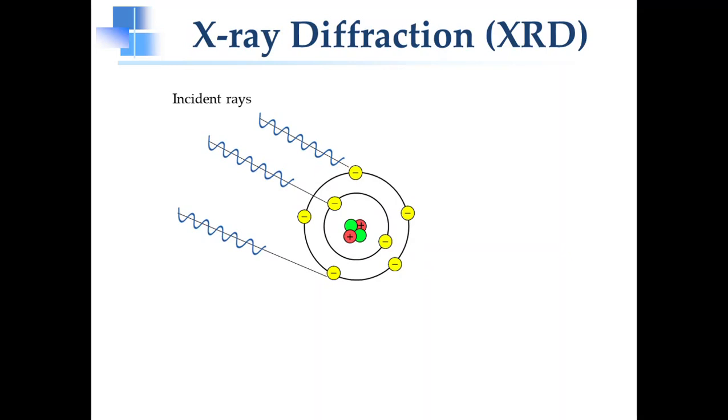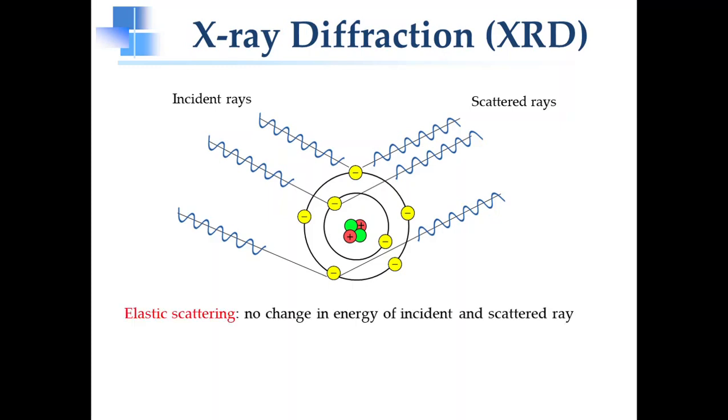When X-rays hit an atom, its energy is absorbed by the electrons. Since this is not enough energy to be released in the form of heat or other form, electrons re-emit this energy in the form of a new X-ray with the same energy as the original. This process is called elastic scattering. The phenomena by which X-rays are reflected from the atoms in a crystalline solid is called diffraction.